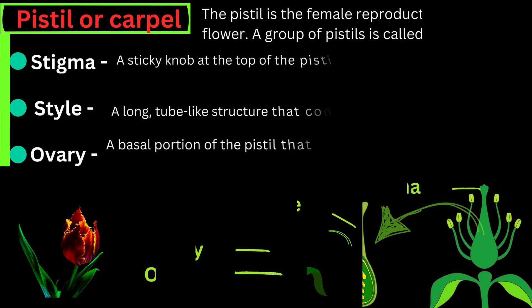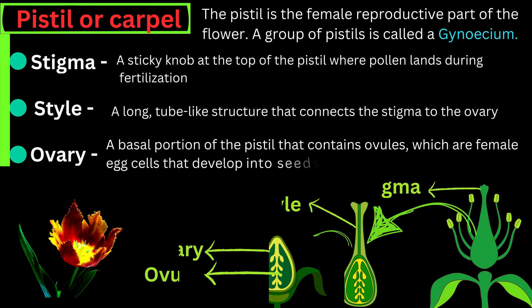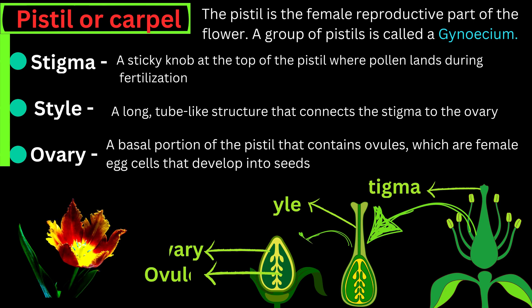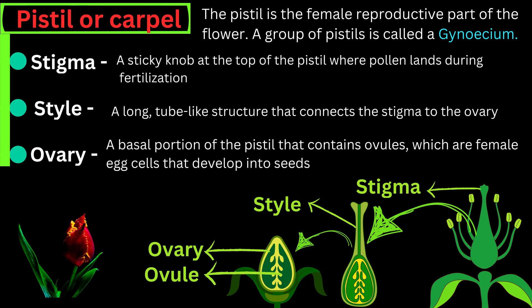The pistil is the female reproductive part of the flower, typically found in the centre of the flower. A group of pistils is called a gynoecium. It has three components: the stigma, a sticky knob at the top of the pistil where pollen lands during fertilisation; the style, a long tube-like structure that connects the stigma to the ovary; and the ovary, the basal portion of the pistil that contains ovules, which are female egg cells that develop into seeds.